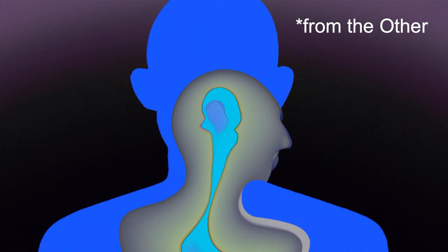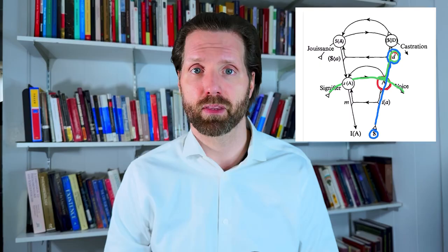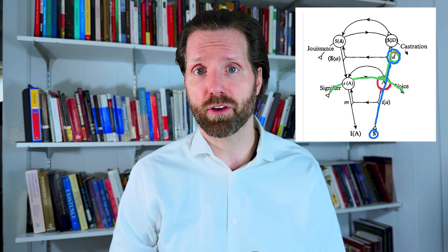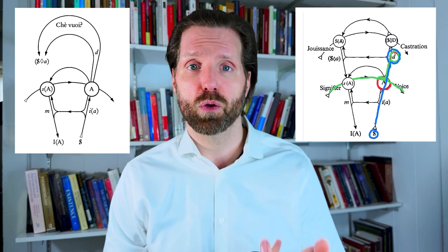This concept of desire implies a certain degree of dependence on and subjection to the other in relation to one's own desire. As a result, a pivotal question emerges for the subject, which is not explicitly depicted in Seminar 5 as its own graph, but will be later on. It's the question, what is it that you desire?